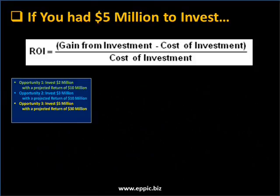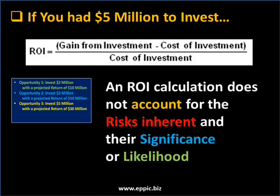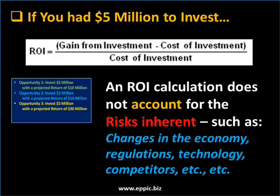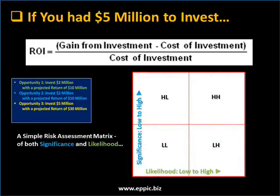The ROI calculation does not account for the risks inherent in each project and their significance or likelihood — we have to do that separately. The risks inherent could include such things as changes in the economy, or regulations and laws, or technology, or competition coming out with something as good or better, or changing the game entirely. A simple risk assessment matrix looks at both significance and the likelihood of those risks.